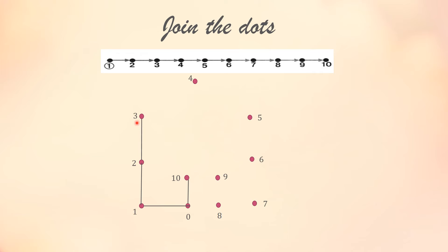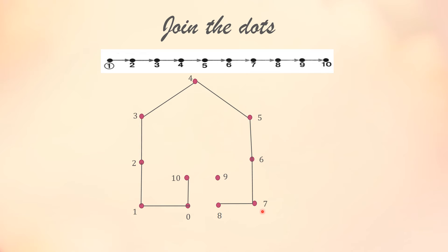What comes after 3? 5? No, it won't be correct. You have to join from 3 to 4. What comes after 4? 5. So you will join from 4 to 5. Next is 6, then 7, then 8, then 9, and last is your number 10.